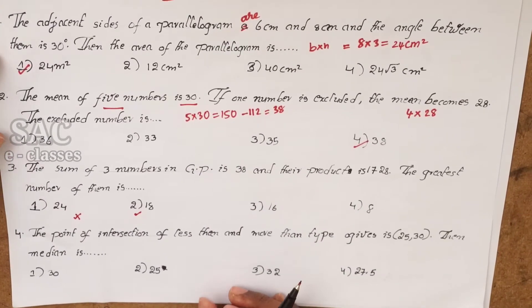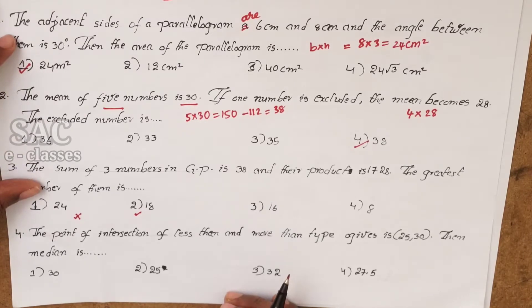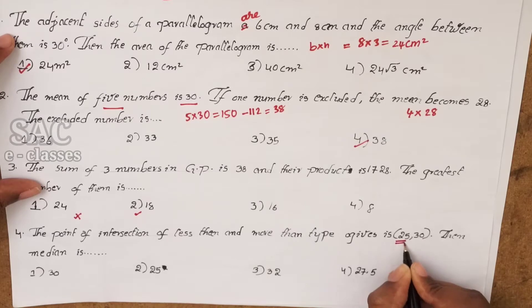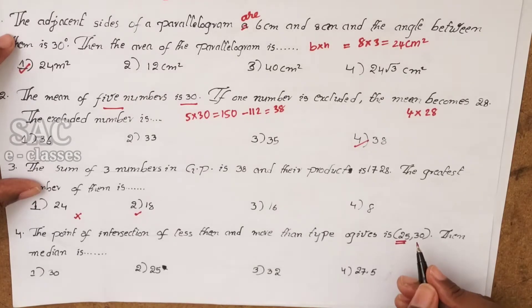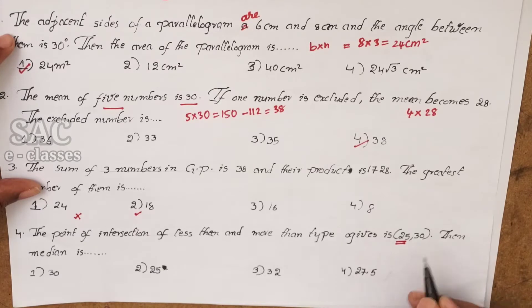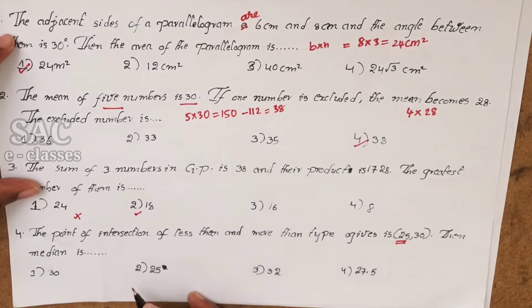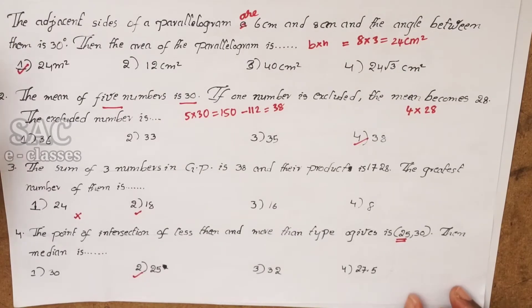The point of intersection of the less than and more than ogive curves is (25, 30). The X-coordinate of their intersection represents the median, where the Y-coordinate is the cumulative frequency value. So the answer is 25.